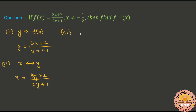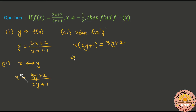The third step is we need to solve for y. Cross-multiplying: x into (2y + 1) equals (3y + 2). Expanding: 2xy + x equals 3y + 2.